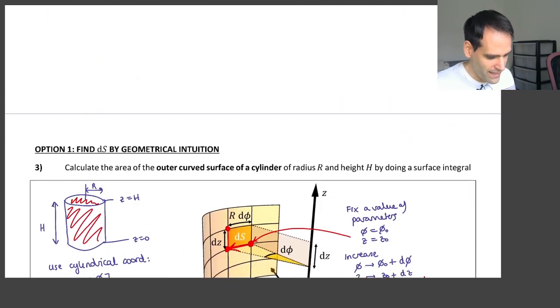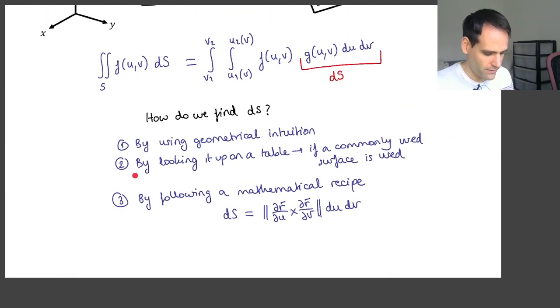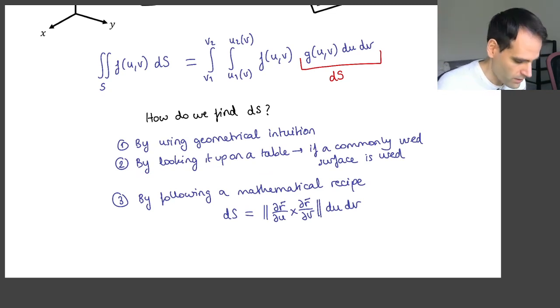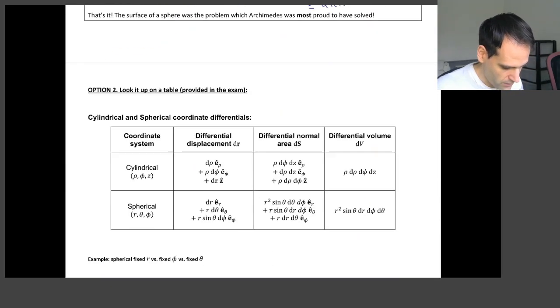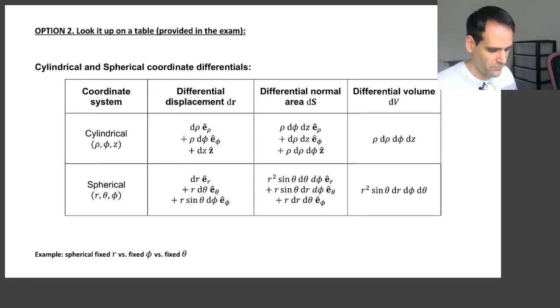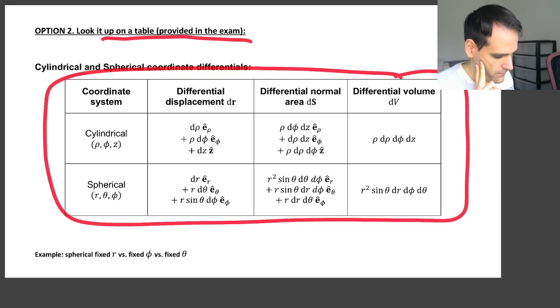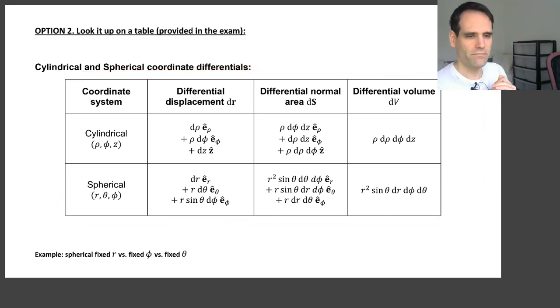The second method for finding dS is the easiest one, by looking it up on a table. And I have to admit in practice that's what everybody does all the time. Especially if you are using a very commonly used surface. So this is the method I'm going to explain in option two. Please note that this table will be provided exactly like this in the equation list of the exam.